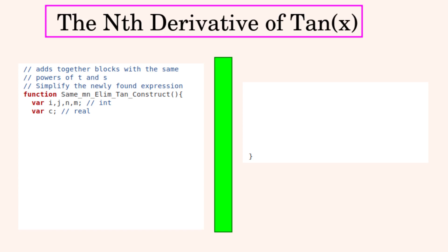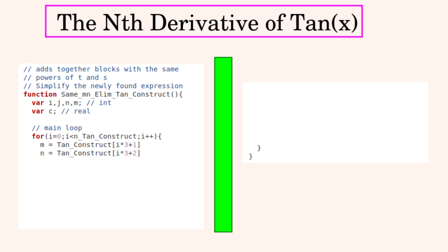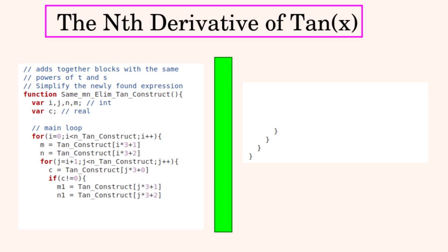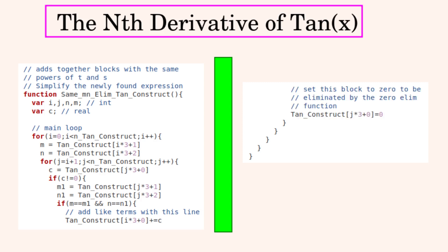This is the first simplification function, which gathers like terms and adds their coefficients by checking whether their powers of s and t — values M and N — are the same. A main loop looks at every term of the newly created nth derivative. We store the values of M and N before entering a second inner loop that looks at all terms ahead of the current term. We get each subsequent coefficient C and compare M and N values; if they are equal, we add them onto the first term and set the duplicate's coefficient to zero, ready to be eliminated.